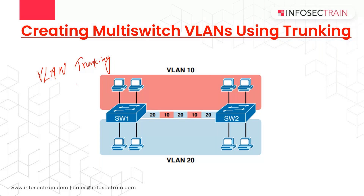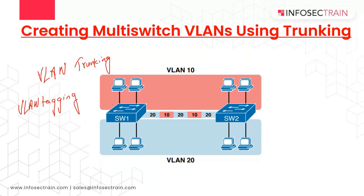VLAN trunking causes the switches to use a process called VLAN tagging, by which the sending switch adds another header to the frame before sending it over the trunk. This extra trunking header includes the VLAN ID, so that the sending switch can associate the frame with a particular VLAN ID and the receiving switch can know which VLAN each frame belongs to.